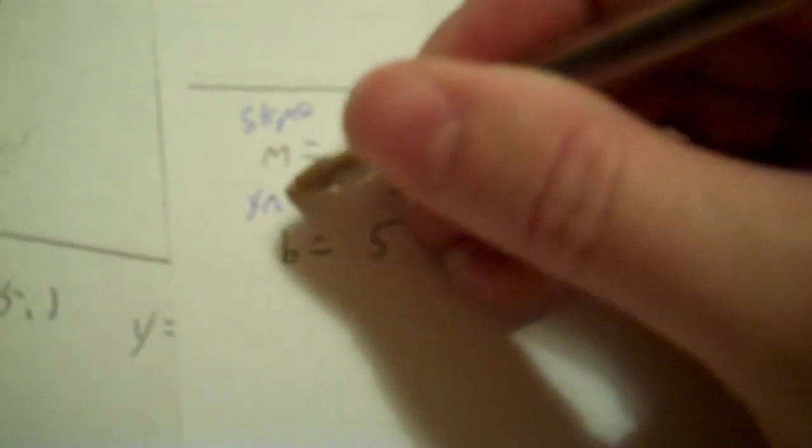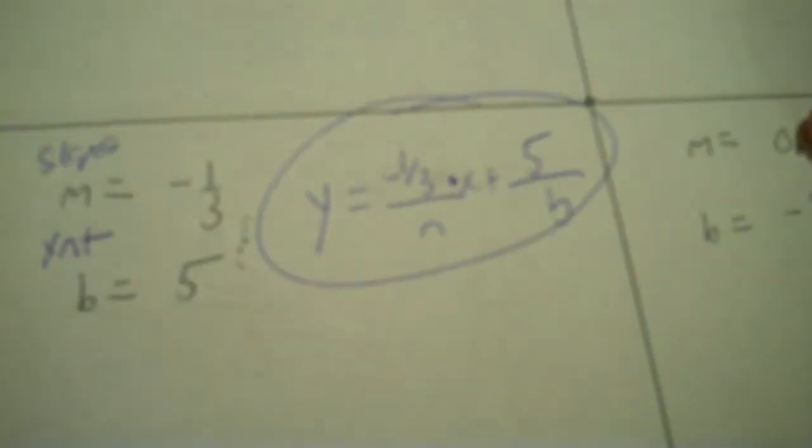Second part, you're taking the m and b and writing the equation. Write an equation with the given slope and y-intercept. M's your slope, b's your y-intercept. You don't have to write that every time. Y equals blank x plus blank. This is m, this is b. Negative one third, five, there's your answer. I need it in that form, y equals blank times x plus blank.